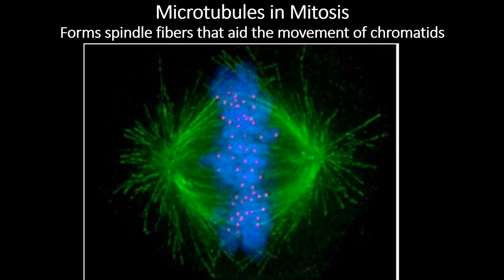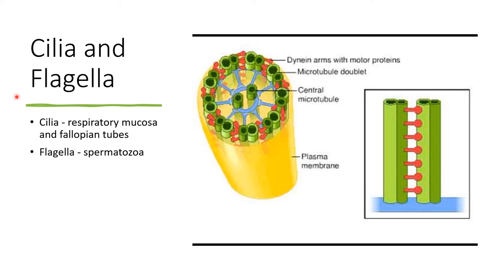Another important function of the microtubules is to help in mitosis, or cell division, where a cell divides into two identical daughter cells. Microtubules help in this process by forming spindle fibers — spindle fibers are nothing but microtubules arranged in a certain way. These spindle fibers aid in the movement of chromatids during cell division. In addition, the cilia and flagella, which project from the surface of certain cells, are also composed of microtubules.